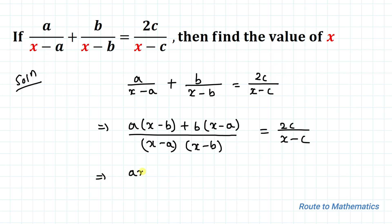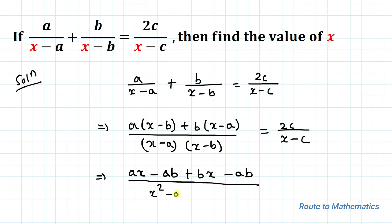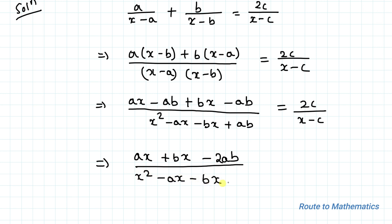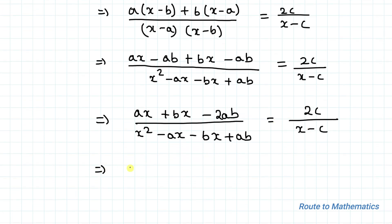This gives us: (ax − ab + bx − ab) / [(x−a)(x−b)] = 2c/(x−c), which simplifies to (ax + bx − 2ab) / (x² − ax − bx + ab) = 2c/(x−c).